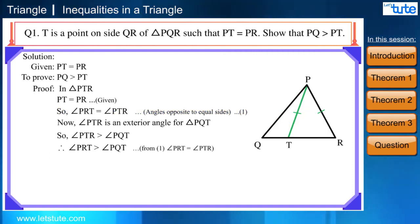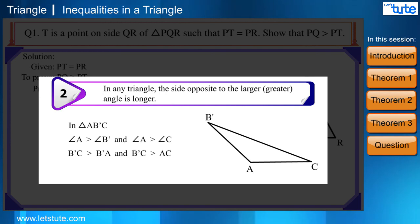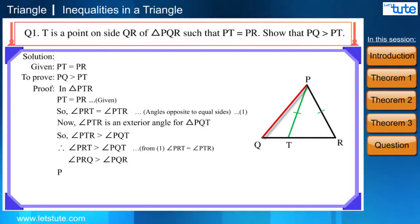Or we can say angle PRQ is greater than angle PQR. So, according to side opposite to larger angle in triangle PQR, PQ will be greater than PR. Because these are sides opposite to larger angle in triangle PQR. Since PT is equal to PR, therefore PQ will be greater than PT. Hence proved.